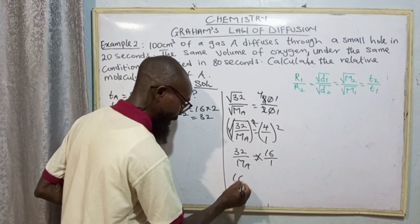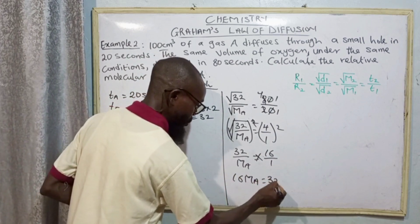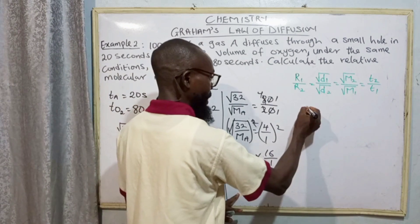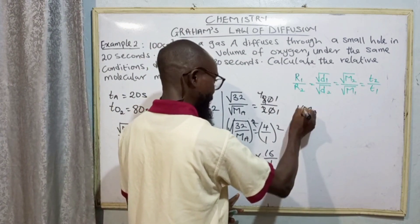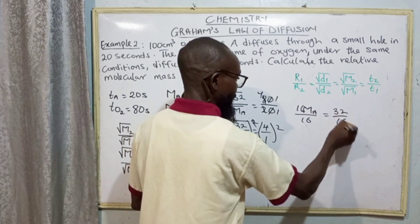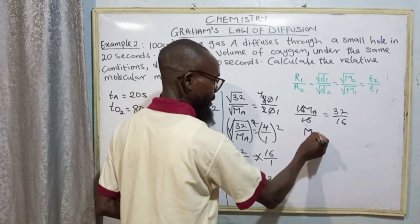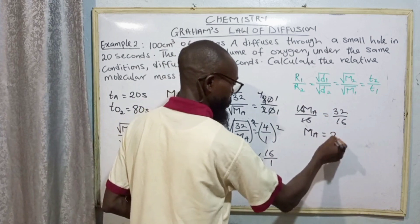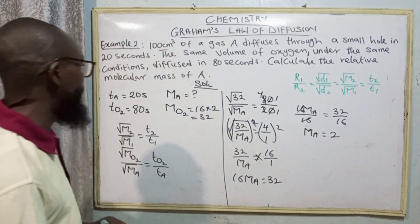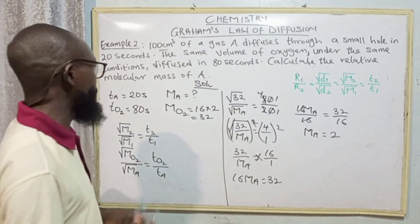Squaring both sides: 32 over M_A equals 16 over 1. So 16·M_A equals 32. Dividing both sides by 16, M_A equals 2. So the relative molecular mass of gas A equals 2.